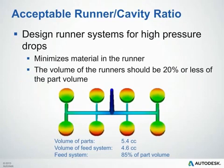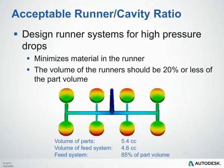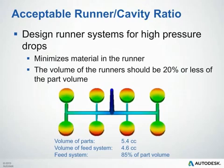For our final design principle, you want to make sure you have acceptable runner-to-cavity ratios. The ratio of the volume of the feed system to the total volume of the cavities should be as low as possible, to reduce wasted material in the runners and minimize re-grind. In the following example, the ratio of runner to cavity volume is 85%, which is quite high. Ideally, the volume of the runner should be 20% of the part volume or less.